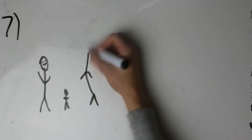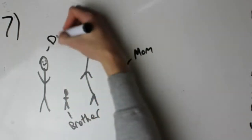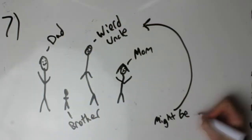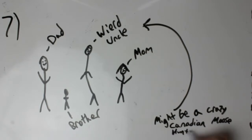Step 7. Introduce the moose to your family. This includes your weird uncle, who might be a crazy Canadian moose hunter, but hopefully not, because you do not want him to kill your moose. You just want him to cut its leg off when the moose doesn't see it coming.